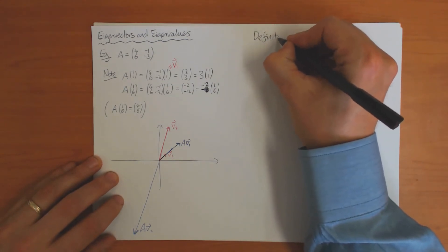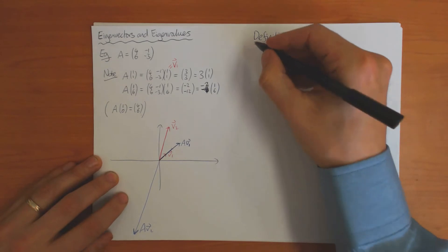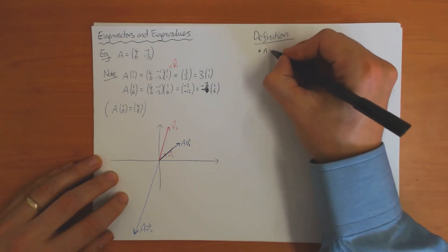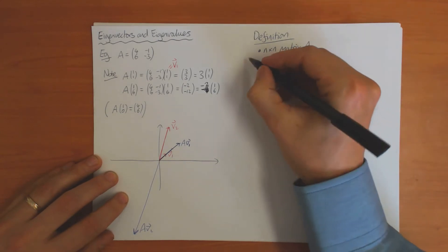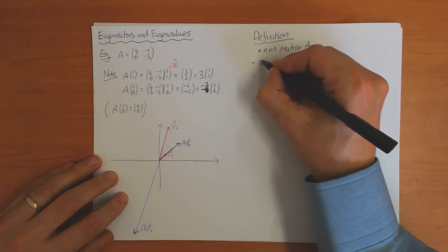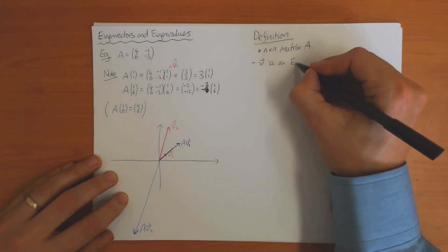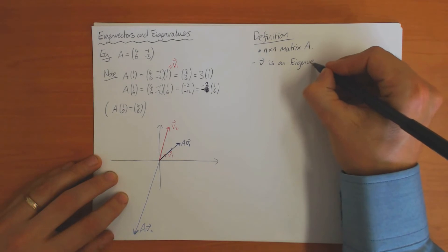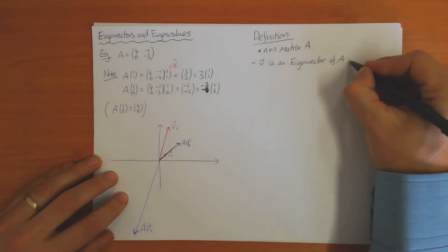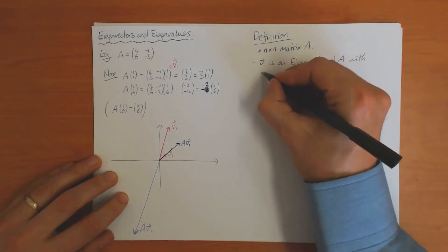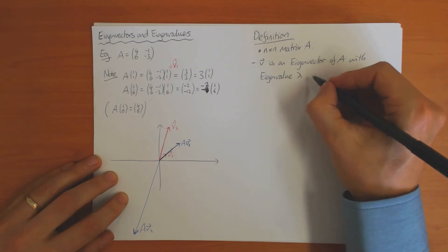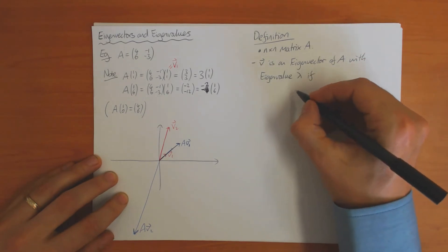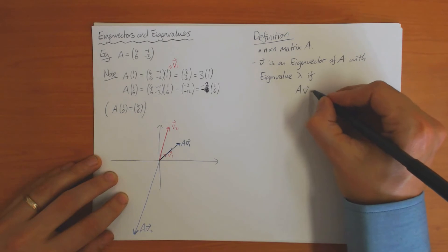I'm now in a position to define for you what eigenvectors and eigenvalues are. The definition works for any n by n matrix A. We say v is an eigenvector of A with eigenvalue λ if the following equation is true: Av = λv, where λ is just some number.